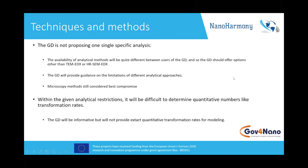There was discussion on this core method because the availability of analytical methods is not uniform across different labs. The guidance document should also give advice to use alternative techniques — for example, EDS instead of x-ray spectroscopy, using SEM instead of TEM, and so on. We will provide guidance about the limitations and possibilities of these different analytical approaches, though TEM microscopy will still be considered the best compromise and core method.